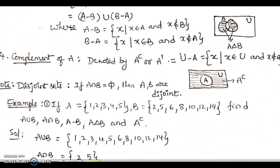Now, coming to the complement of A. The set is denoted by A superscript C or A dash, also denoted by U minus A, the universal set minus A. It is the collection of all elements x such that x belongs to the universal set and x does not belong to A. The corresponding Venn diagram shows the shaded portion which represents A complement. We also note that if the intersection of any two sets is an empty set, then we say that the two sets A and B are disjoint.